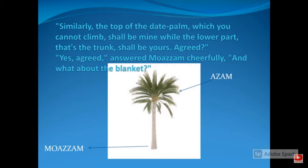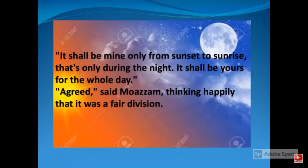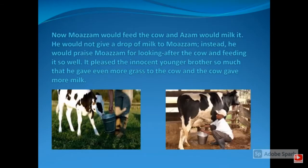Similarly, Assam suggested: the top of the dead palm, which you cannot climb, shall be mine, while the lower part — the trunk — shall be yours. Moazam agreed cheerfully. As for the blanket, Assam said it shall be his only from sunset to sunrise — during the night — while it shall be Moazam's for the whole day. Moazam agreed, thinking happily that it was a fair division.